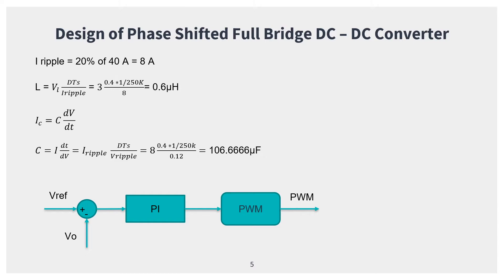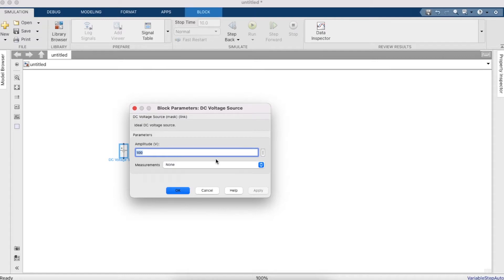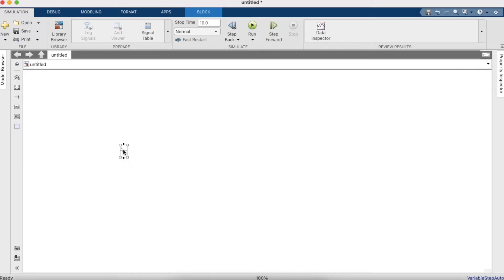This is the simple control for the whole system: a voltage reference is compared with the output voltage, the error goes to a PI controller, then to a PWM block, and you get the switching outputs. Now to begin with the simulation, we'll need a DC voltage source set to 600 V as decided.